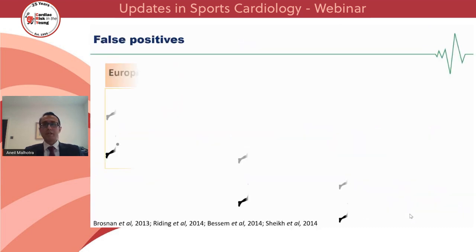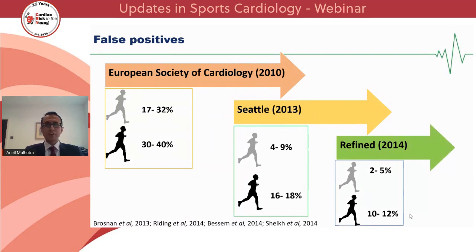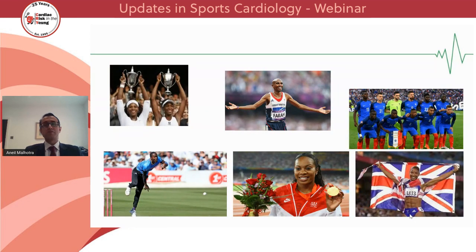There have historically been several challenges when screening black athletes, including correctly identifying individuals at risk. The false positive rates using various criteria from experts over the past decade have fallen from nearly half of all black athletes using the original European Society of Cardiology recommendations, down to 10–12% using refined criteria — but this was still deemed unacceptably high. While historically most studies focused on adult white male athletes, the group now most intensely studied is athletes of Caribbean or African descent, universally termed black athletes, who often form a majority of elite sports teams such as the World Cup-winning team for France in Russia in 2018.